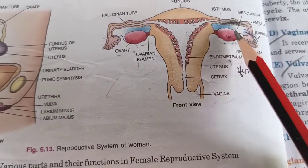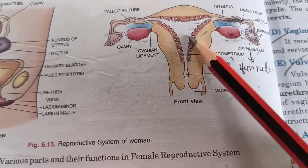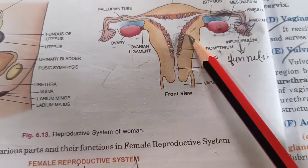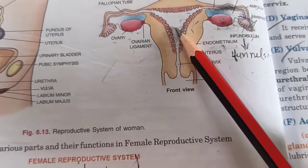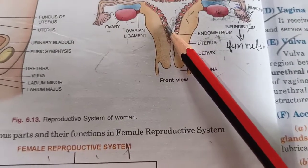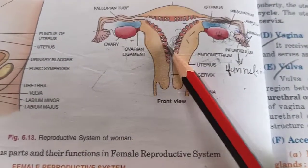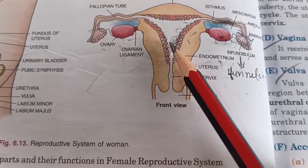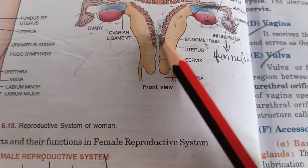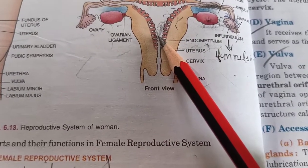After the fallopian tube comes the uterus. The uterus is pear-shaped and is a thick-walled, muscular organ. It is called thick-walled and muscular because the fetus survives here for 9 months. That is why it is thick-walled, hollow, and muscular.